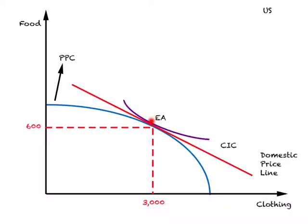This point here represents the point of tangency between production as well as consumption — the point of tangency between the PPC, the domestic price line, and the community indifference curve. So this point of tangency must be the equilibrium in the U.S. in autarky, where consumption and production equilibrium coincide.